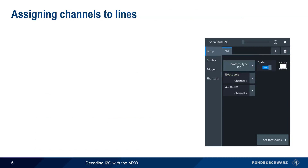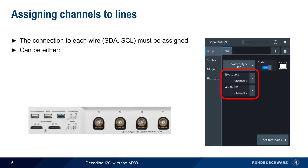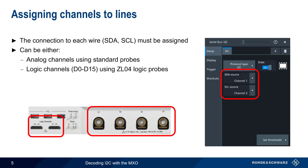The next step is defining the connection to the two wires used in I2C: SDA (serial data) and SCL (serial clock). These connections can be made either using the analog channel inputs and standard passive probes, or by using the logic channel connectors attached to logic probes. In this presentation, we'll be using the analog channels, but the configure and analysis functions work more or less identically for both types of inputs.